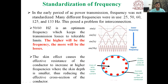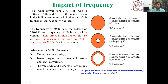The skin effect causes the effective resistance of the conductor to increase at higher frequencies as the skin depth becomes smaller, reducing the effective cross-section of the conductor. As shown in the figure, comparing DC conductor, AC conductor, and AC at higher frequency — as frequency increases, resistance increases. Skin effect is higher for 60 Hz, so increased resistance is more at 60 Hz compared to 50 Hz, though the difference is small.